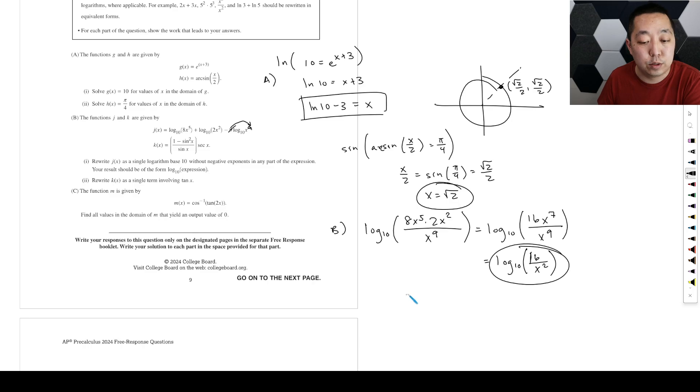Rewrite k as a single term involving just tangent of x. So for k of x, we just want tangent. So we want to do 1 minus sine squared x over sine x. Now my first step is always write everything in sine and cosine. And then we'll convert everything. So secant is 1 over cosine of x. Now what are we going to do here? 1 minus sine squared, I know I can convert that into cosine squared. So that's one identity because sine squared plus cosine squared is 1. So that's cosine squared x over sine x times cosine of x.